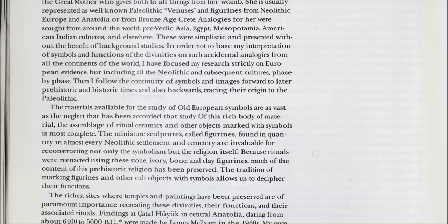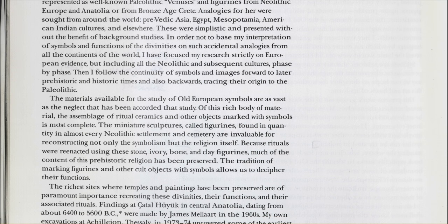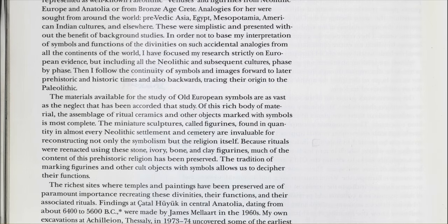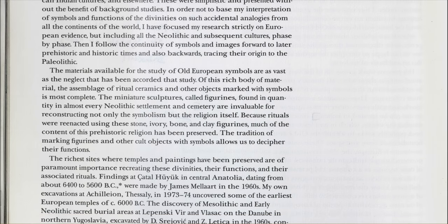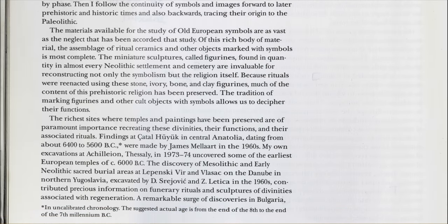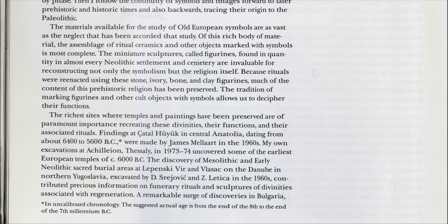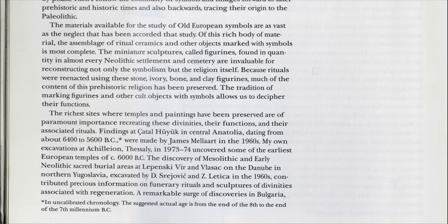The materials available for the study of old European symbols are as vast as the neglect that has been accorded that study. Of this rich body of material, the assemblage of ritual ceramics and other objects marked with symbols is most complete. The miniature sculptures called figurines, found in quantity in almost every Neolithic settlement and cemetery, are invaluable for reconstructing not only the symbolism but the religion itself. Because rituals were reenacted using these stone, ivory, bone, and clay figurines, much of the content of this prehistoric religion has been preserved. The tradition of marking figurines and other cult objects with symbols allows us to decipher their functions.